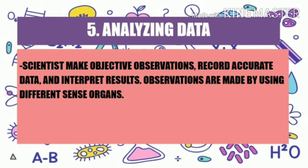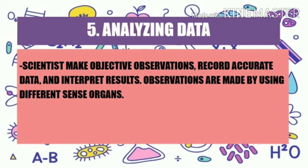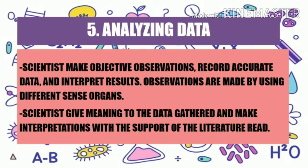After experimentation comes the analyzing of data. Scientists make objective observations, record accurate data, and interpret results. Observations are made using different sense organs. In our experiment, we are using our sense of sight, since we are trying to see which food will be swarmed by the ants. Scientists give meaning to the data gathered and make interpretations with the support of literature read, in order to make a conclusion.